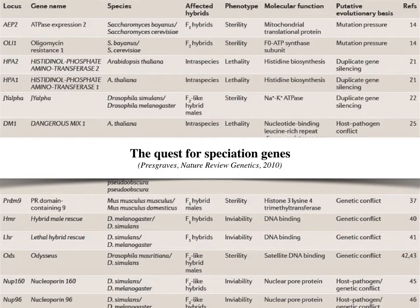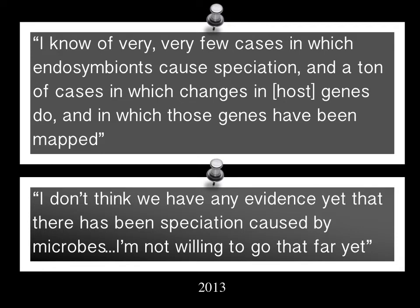More recently, there has been a large effort in identifying speciation genes in the evolutionary genetics community, though not much talk about symbionts in this process. In 2013, I saw quotes reflecting this emphasis on genes over microbes: 'I know of very few cases in which endosymbionts cause speciation, and a ton of cases in which changes in host genes do.' And: 'I don't think we have any evidence yet that there has been speciation caused by microbes.'